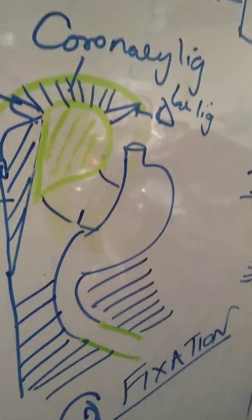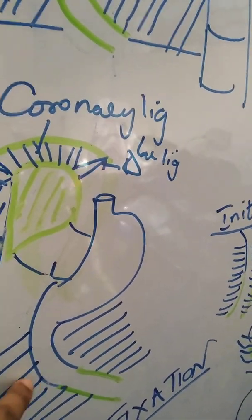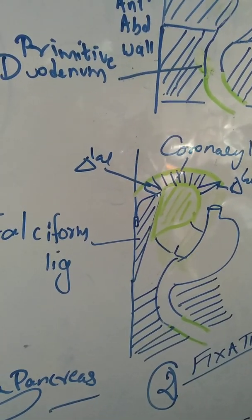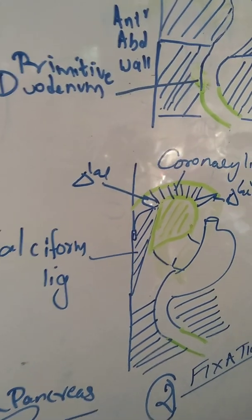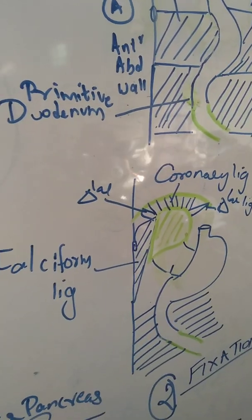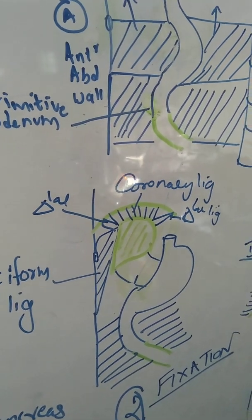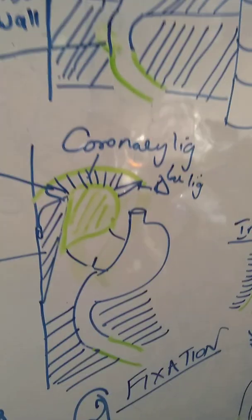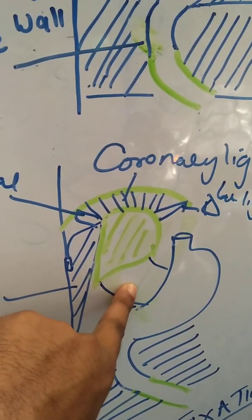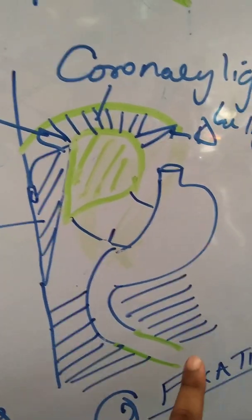From the ventral mesogastrium and meso duodenum, there will be growth of a bud called the hepatic bud. Once the hepatic bud grows, it gives rise to various peritoneal folds: between the liver and the anterior abdominal wall it forms the falciform ligament, the right and left triangular ligaments, and coronary ligament. Between the stomach and the liver, it forms the lesser omentum. So this ventral and dorsal meso duodenum is present, and the structure is convex forward.